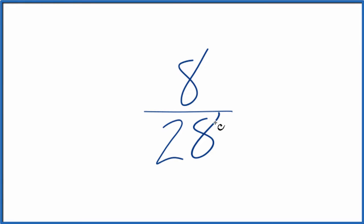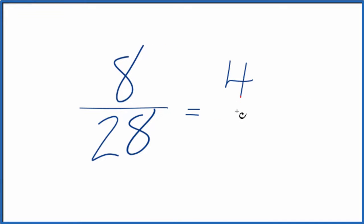So since we have even numbers here, I think I'll just divide both the numerator and the denominator by 2. 8 divided by 2 is 4. 28 divided by 2 is 14.